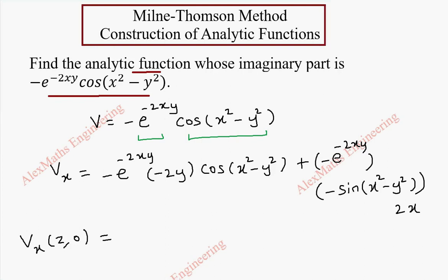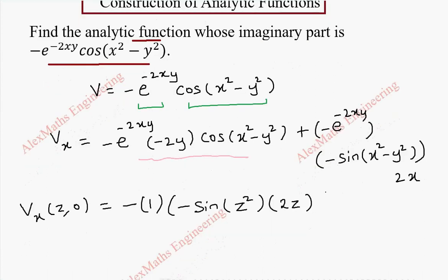When we put y equal to 0, the first term becomes 0 because it contains y. For the second part, when y is 0, the power is totally 0, and anything to the power 0 is 1. So minus e to the power 0 is 1, and there is a separate minus sign. With y equal to 0, this gives minus sin of z squared minus 0, which is sin z squared times 2z. So totally this becomes plus 2z times sin z squared.